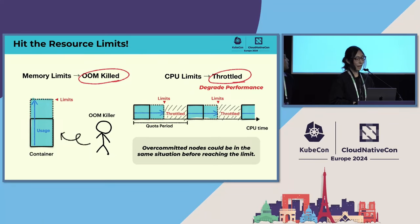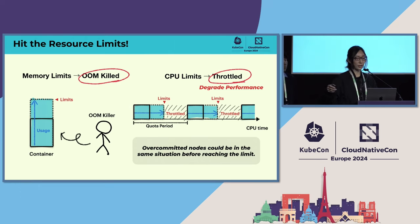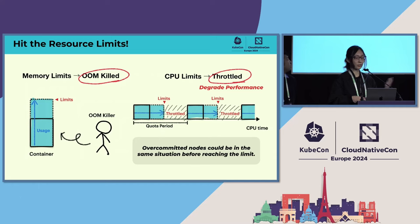Let's explore what happens when a running container hits a limit. If a container goes over its memory limits, it's killed by the OOM killer. As for CPU, it's a time-slice resource — if a container exceeds its limit, it will be throttled until the quota period ends. It is allowed to resume in the next quota period, but this delay leads to a performance degradation.